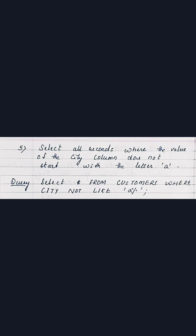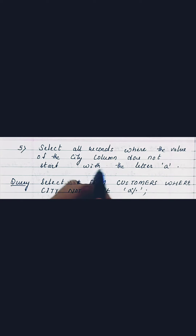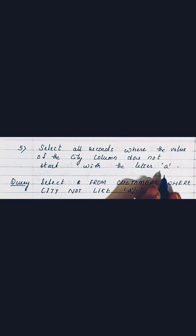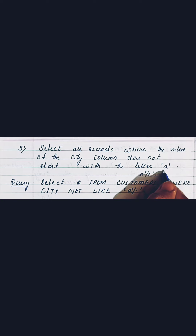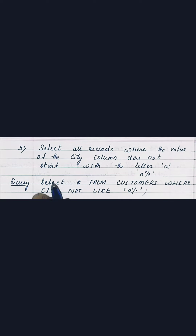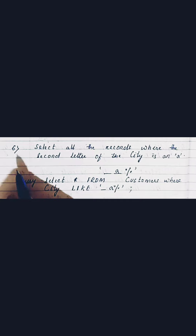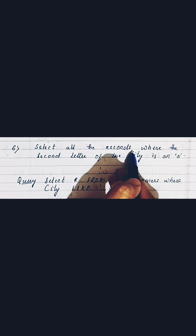Moving to the next question: select all records where the value of the city column does NOT start with the letter 'A'. If it simply started with 'A' we would write 'A%', but since it says does not start with 'A', we add NOT before LIKE. The query is: SELECT * FROM customers WHERE city NOT LIKE 'A%'.